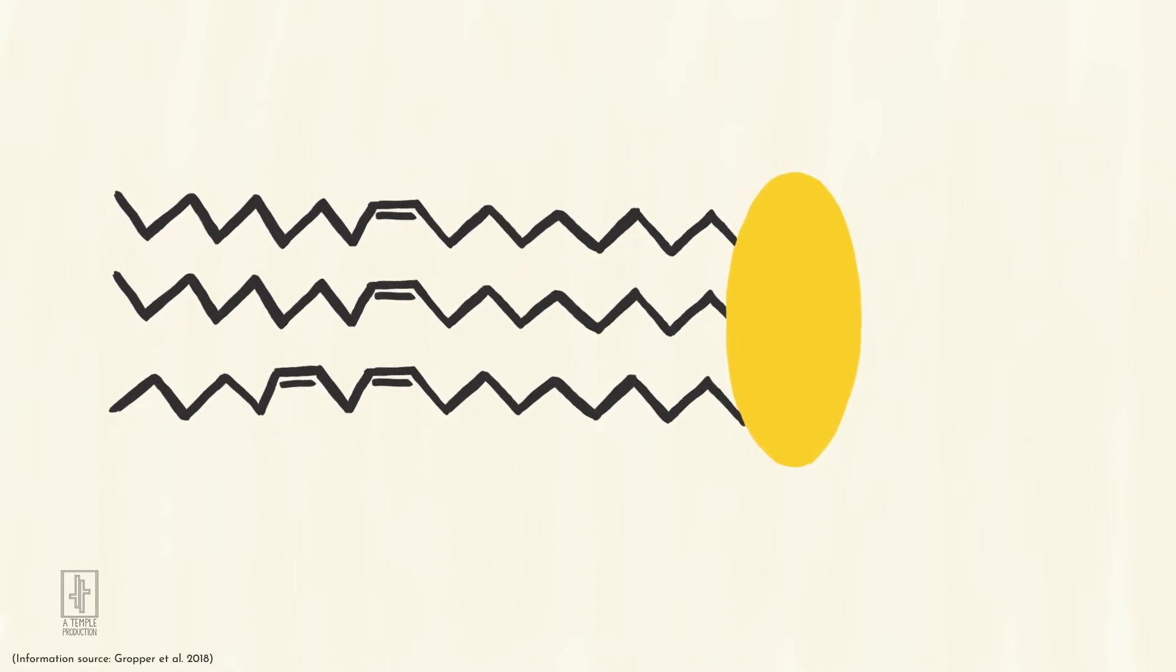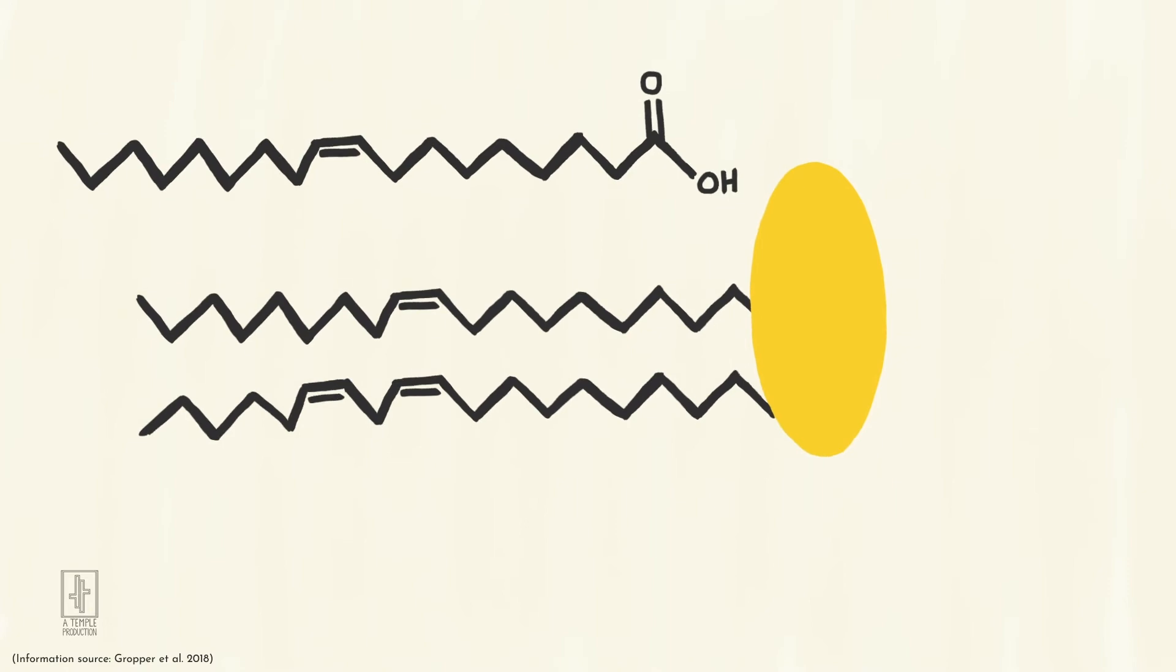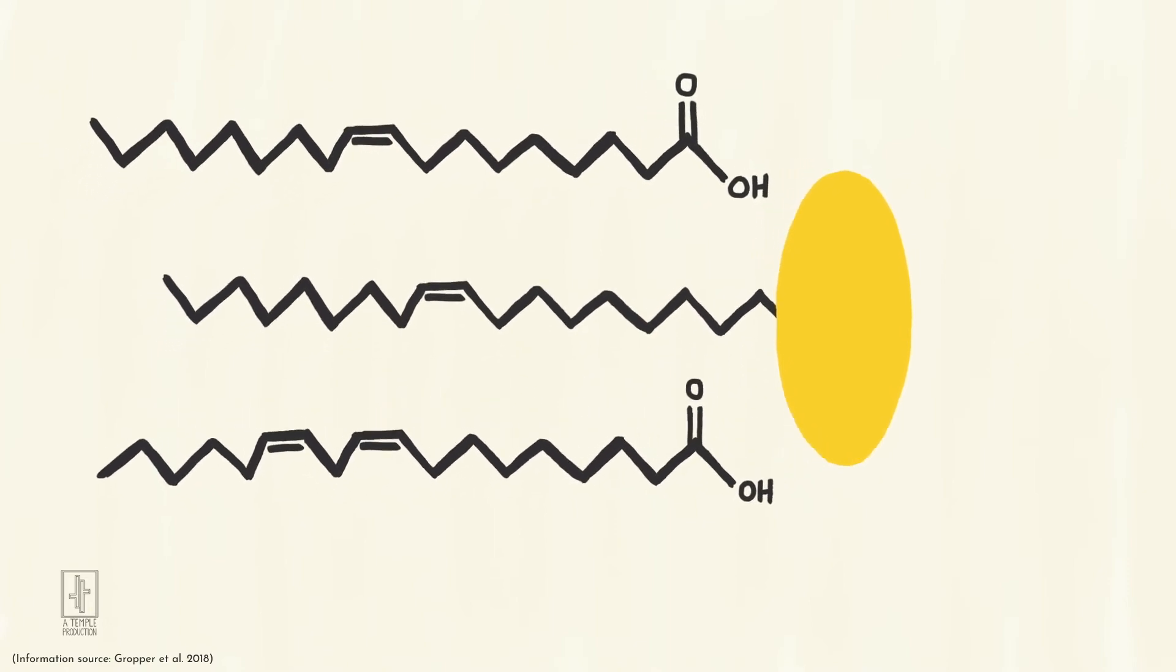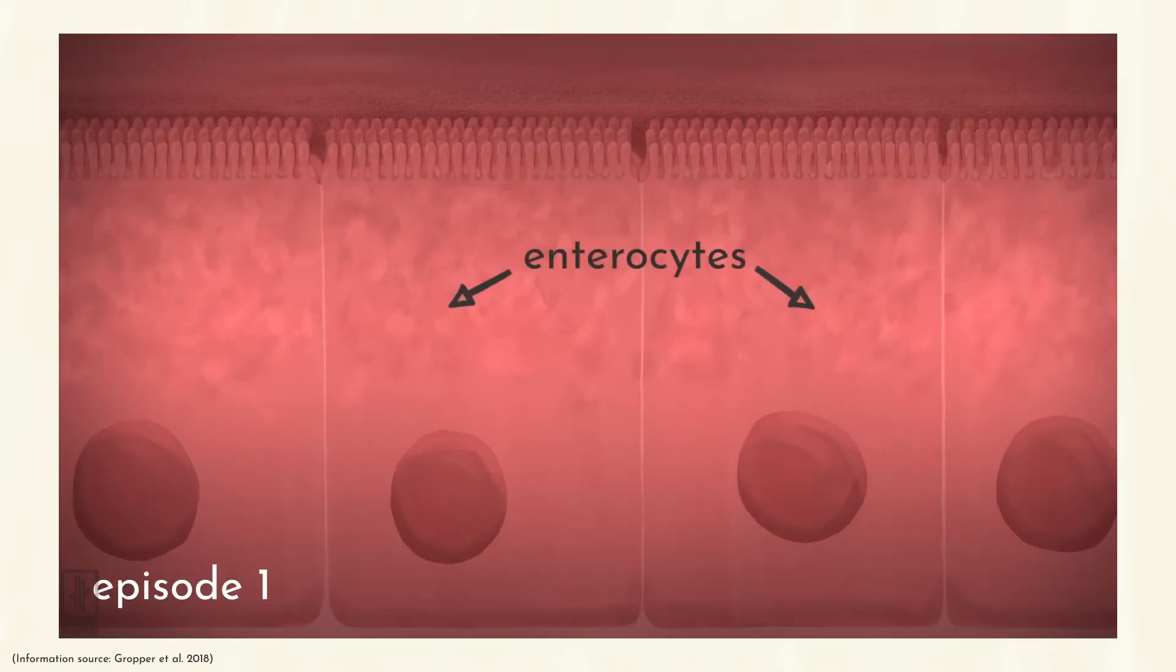Here's how it works. Before the submarine can be built, the fat molecules have to be broken down to a smaller form so they can get into the enterocyte. Remember these from episode one? These are the cells along the wall of your small intestine. This is where the chylomicron submarine is built.